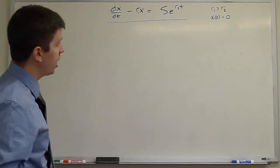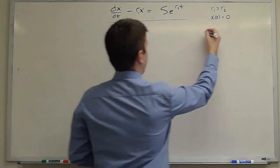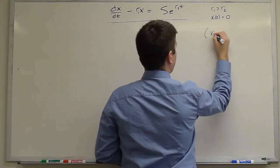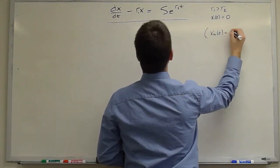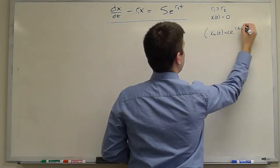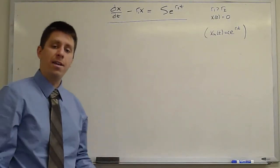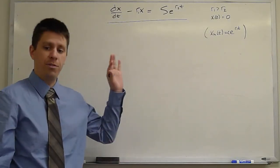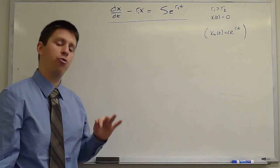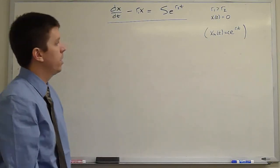We already saw when we solved the homogeneous version of this equation that a homogeneous solution is e to the R1t times an integration constant. We'll keep that knowledge in the back of our head. Those are usually easier to find than particular solutions. This is just a method for quickly finding the particular solution associated with this equation.